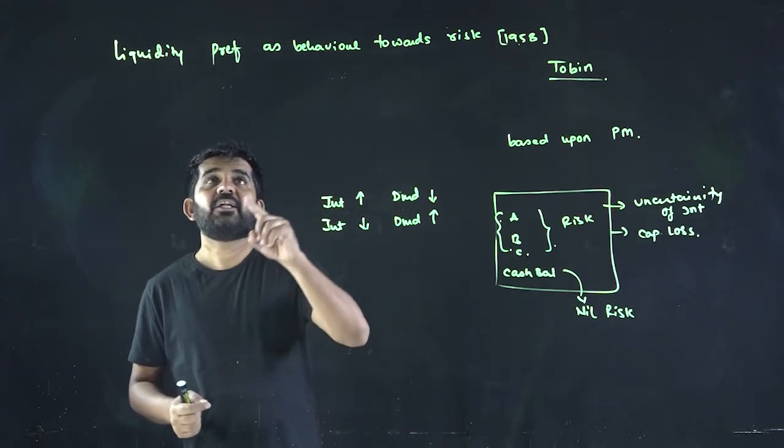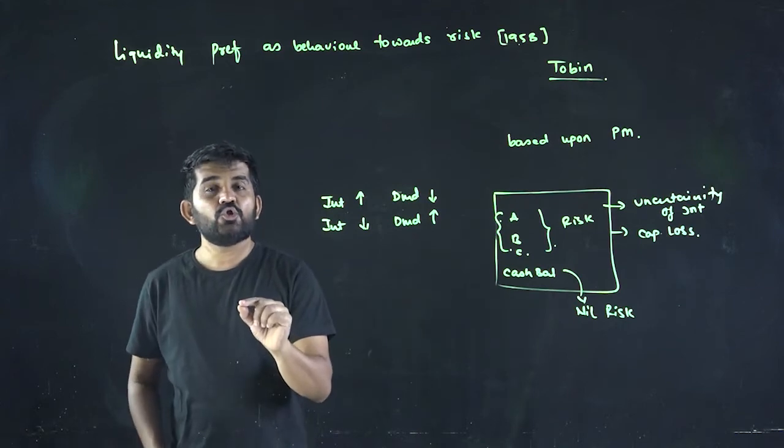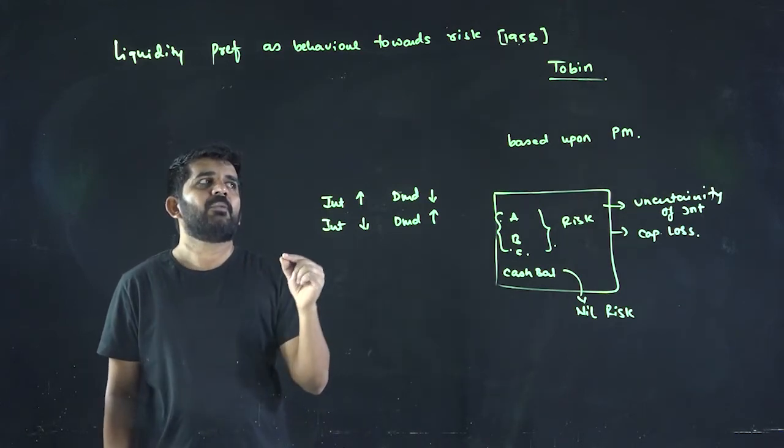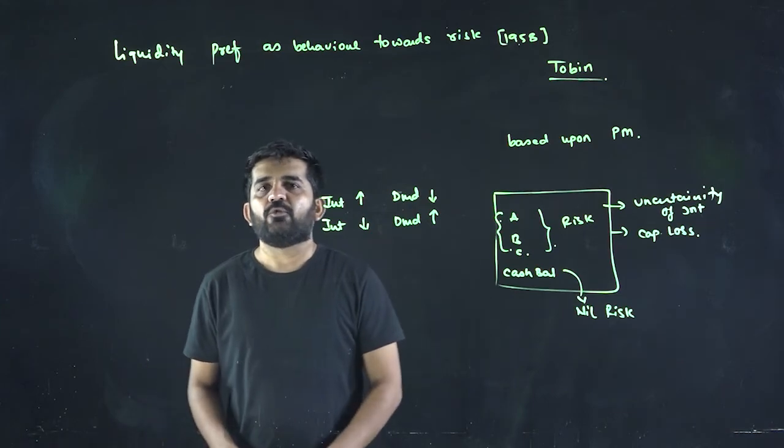This was liquidity preference as a behavior towards risk. This is an article published by Mr. Tobin in 1958. Thank you, friends.